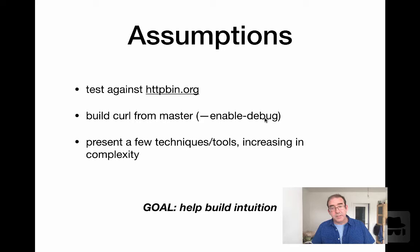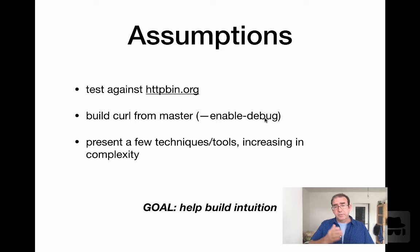Some of the assumptions I'm going to make for this presentation: I'll test against httpbin.org — it's a nice little test server. I'm building curl from master, enabling debug so I can get the symbols. Throughout the whole presentation I'll show a few tools and techniques, increasing in complexity. The goal is to give some intuition of how the internals work and their impact on time and resource.